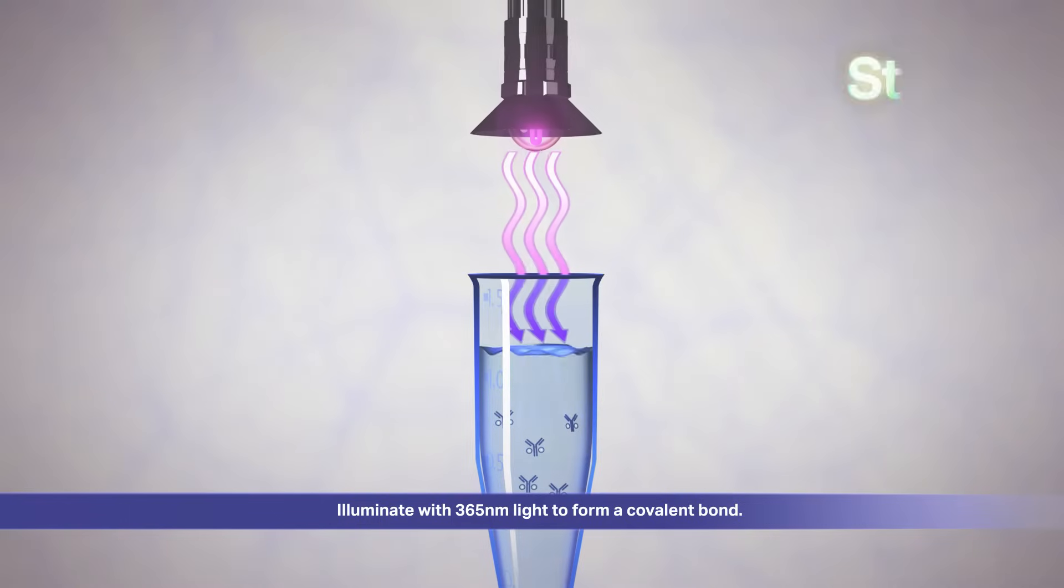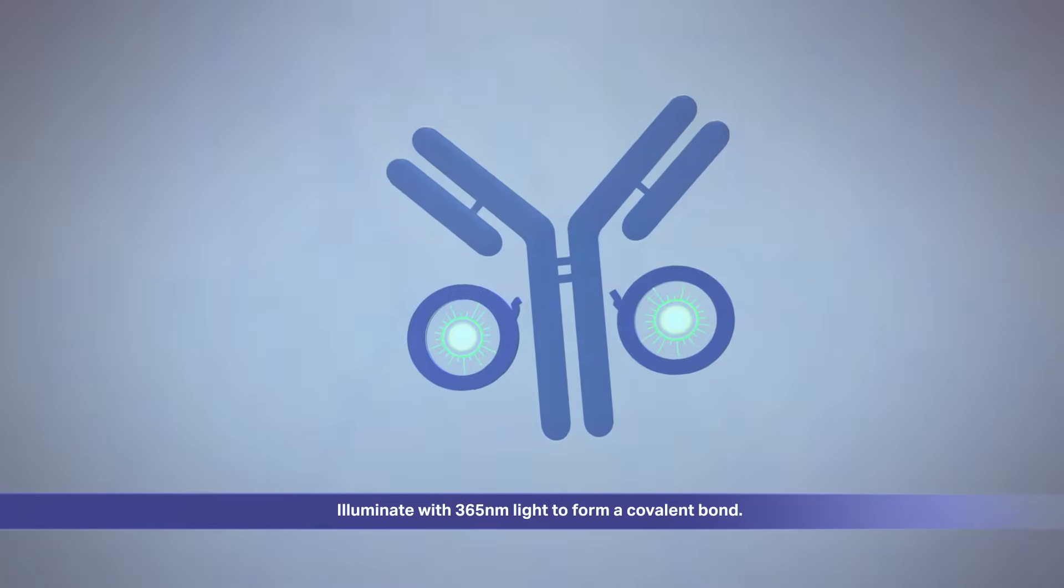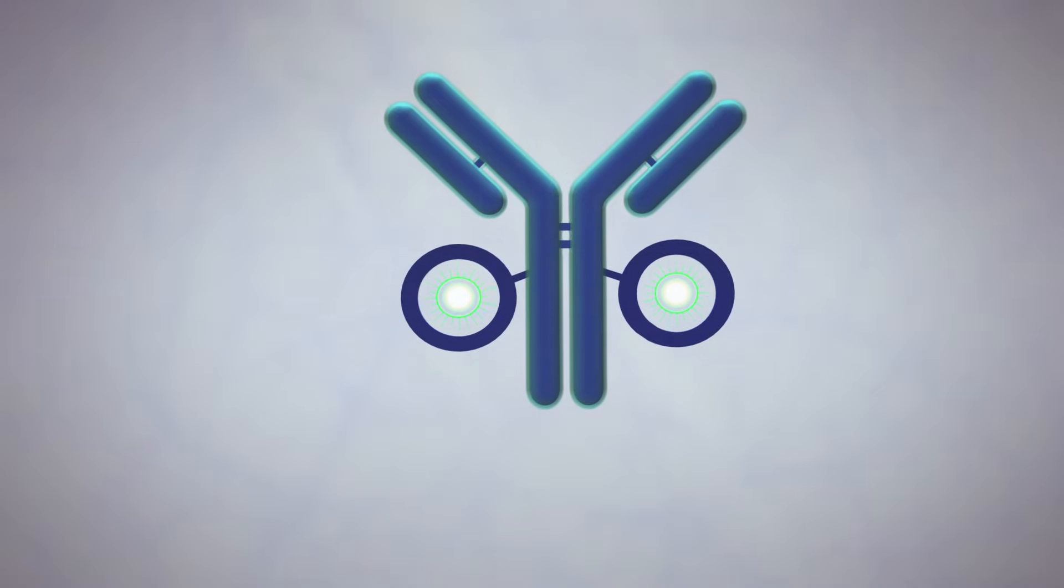Then, illuminate your sample with non-damaging 365 nanometer light, and the OyoLink reagent will form a highly stable covalent bond with your antibody. And that's it! Your labeled antibody is ready to be used.